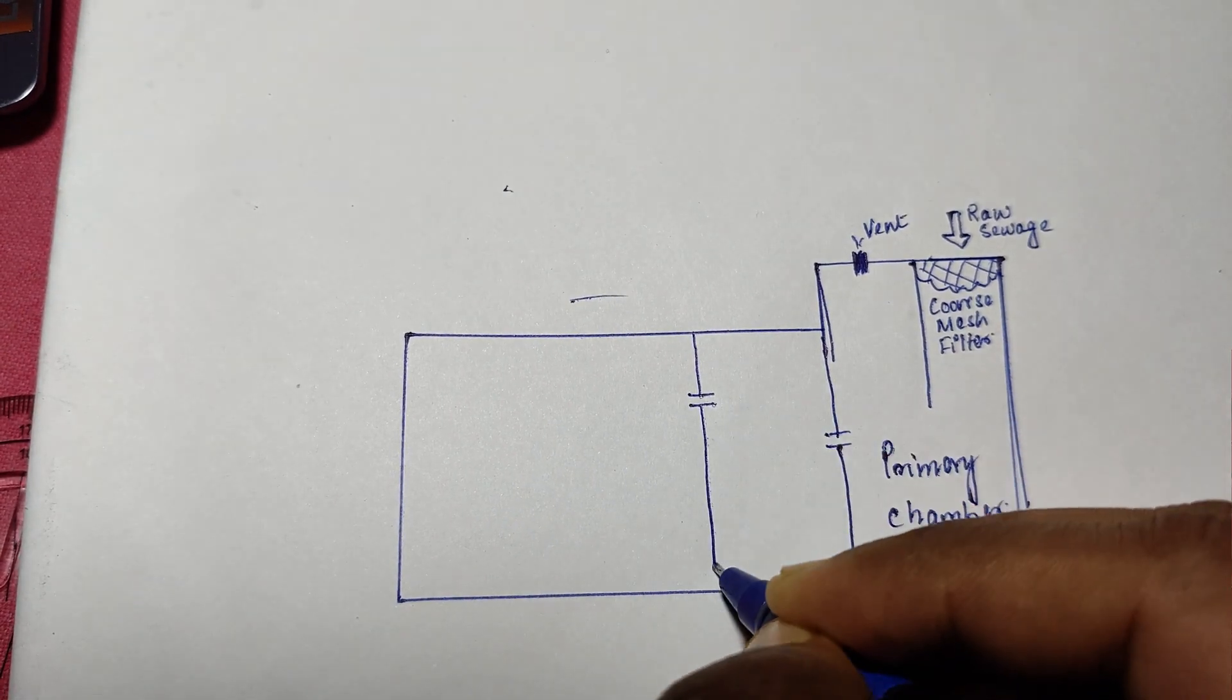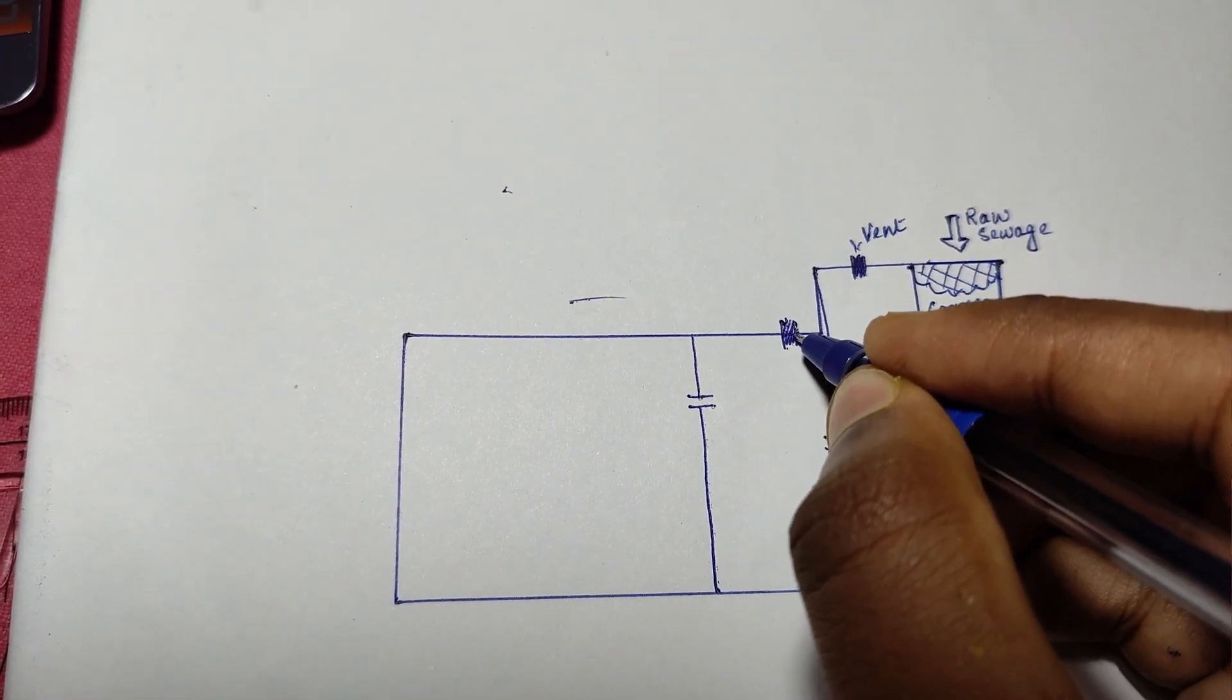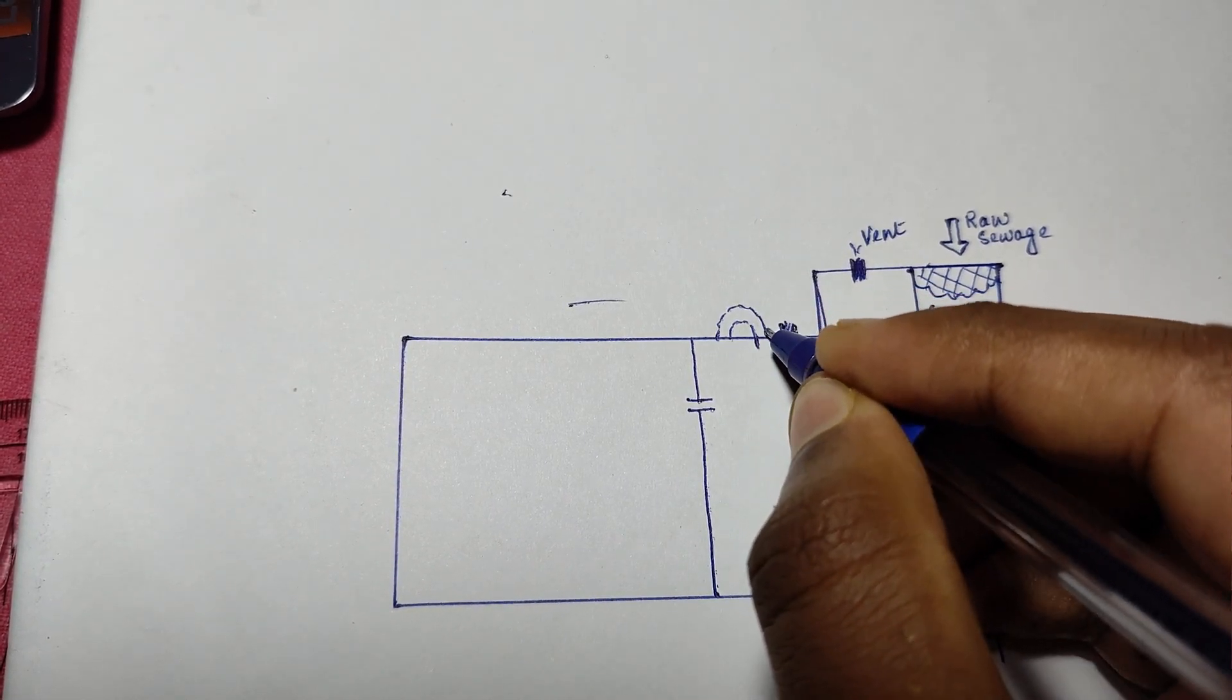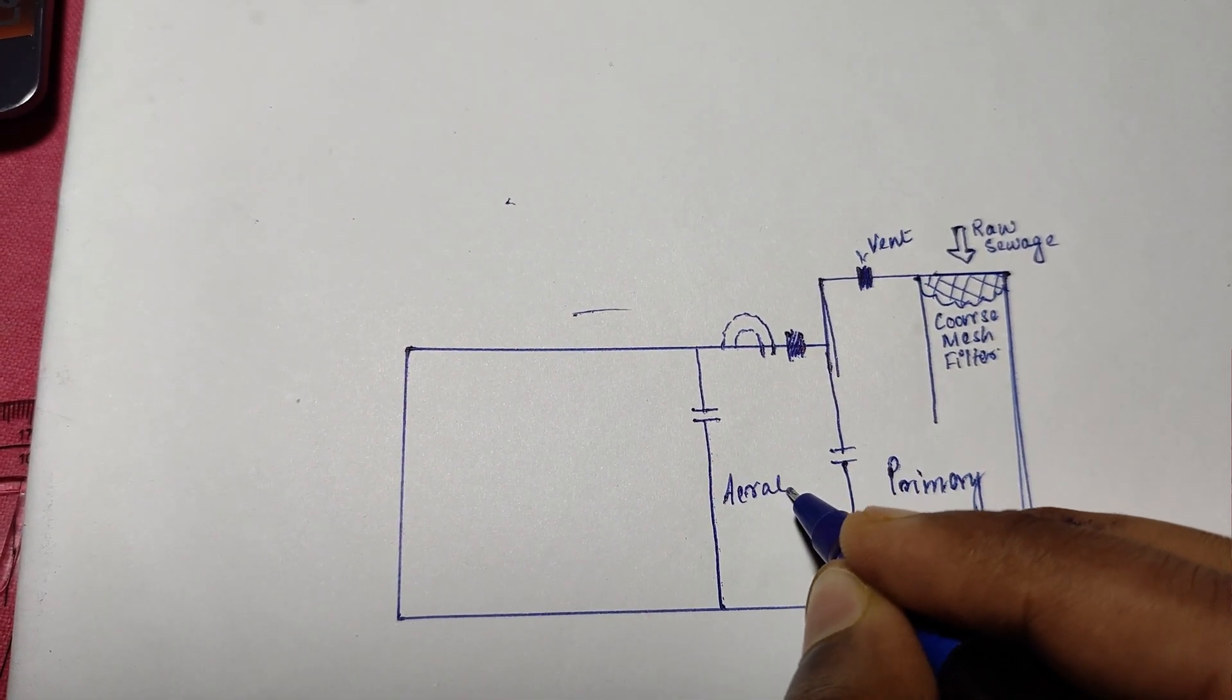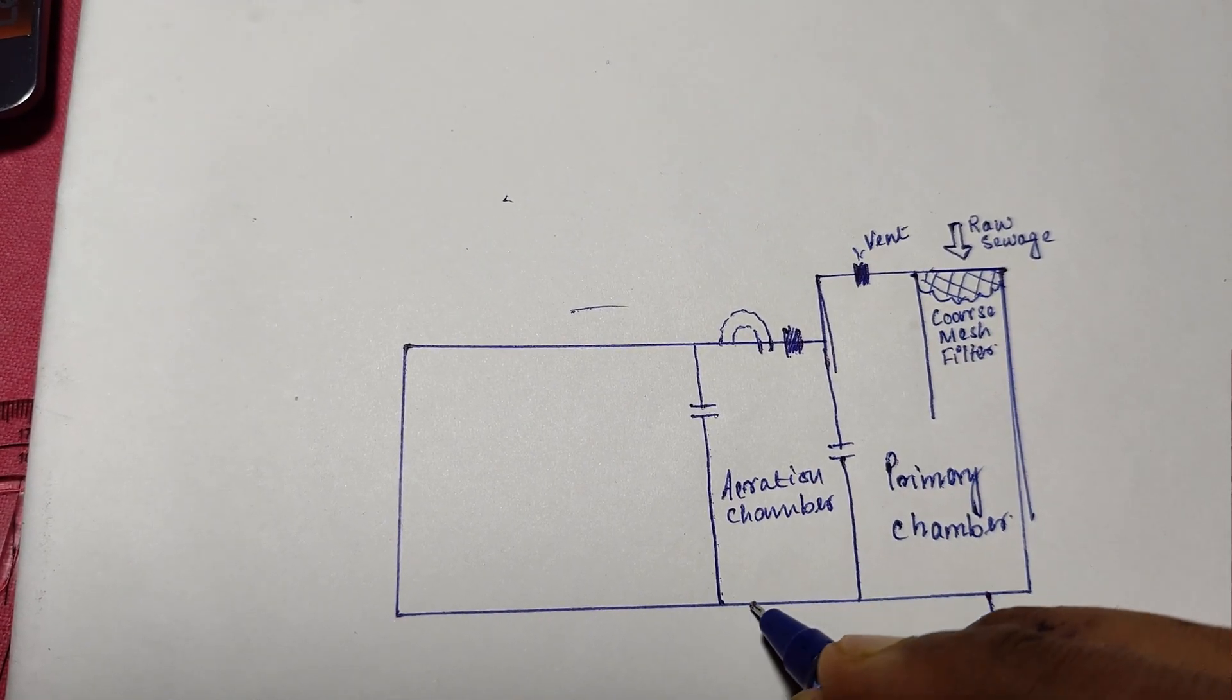is easier for them to break it down further. Second is the aeration chamber. This is where the magic happens with aerobic bacteria. The sewage enters this chamber and here is where the biological action unfolds.